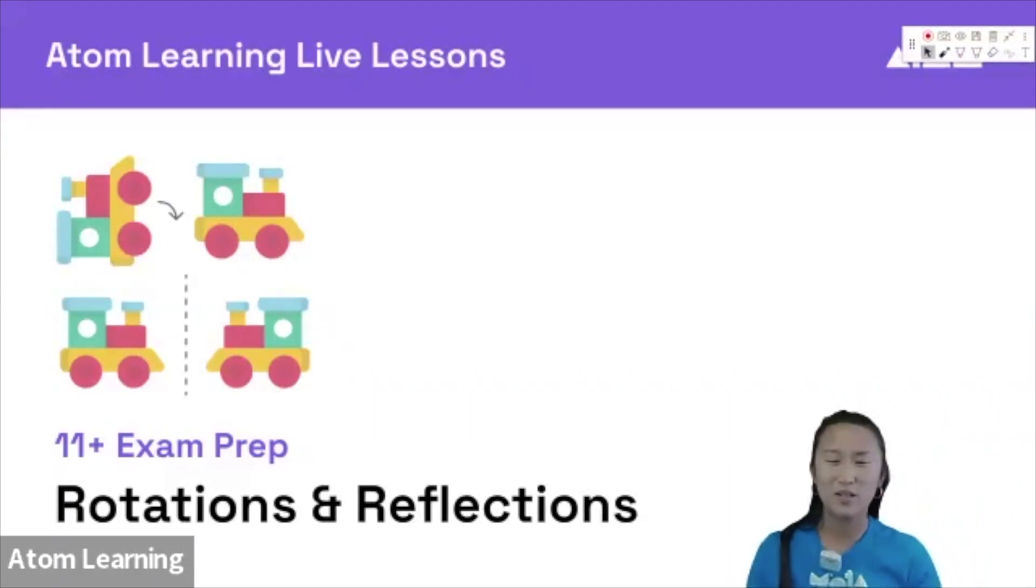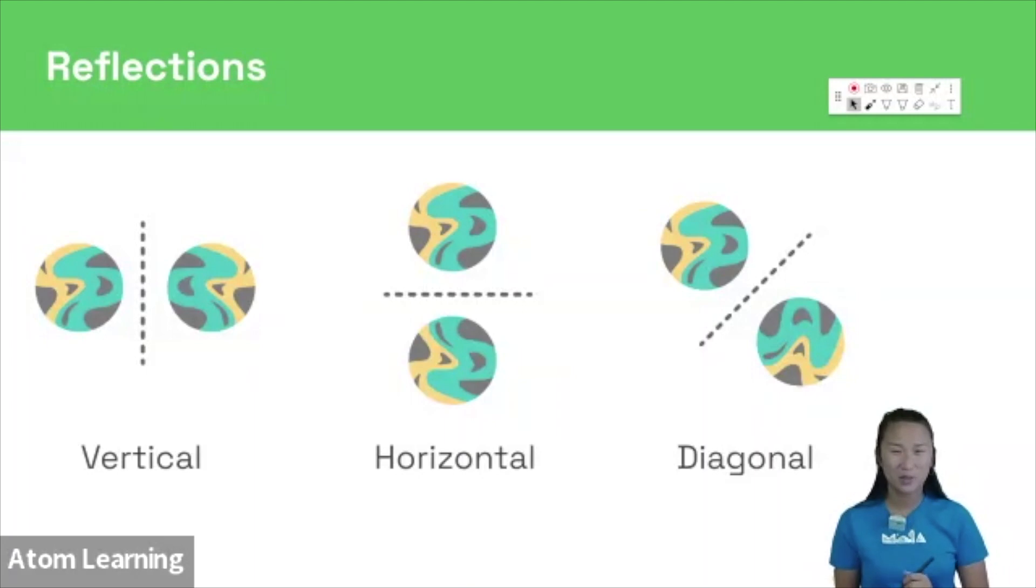Hello and welcome to today's 11 plus exam prep lesson. We say a shape has been reflected when all of its elements have been flipped across a mirror line.